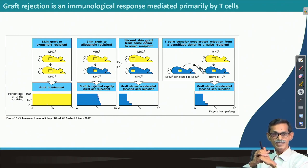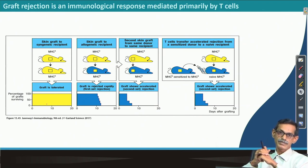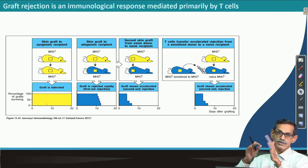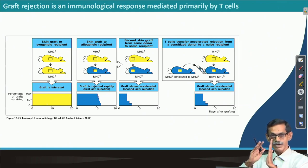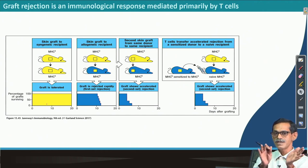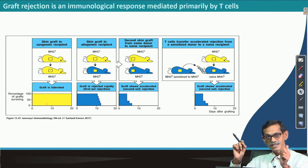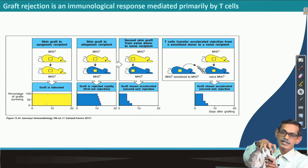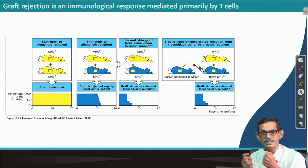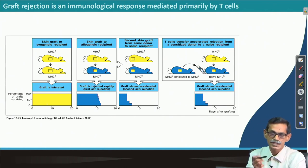From the name, histo means tissue and compatibility means some genes — which are highly polymorphic — are responsible for compatibility of tissues from donor and recipient. As we discussed in T cell lectures, our T cells normally do not recognize foreign MHC (MHC restriction), but a significant population of T cells in our immune system are allo-reactive — they can recognize others' MHC — and these allo-reactive T cells are the major concern for rejection.